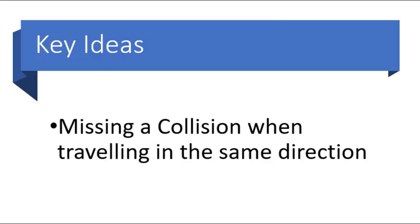When two bodies move in the same direction and they just about miss colliding, then at the point where they just miss the collision, their velocities would be identical. Therefore, their relative velocities would be zero. Also, their relative displacements would be zero with respect to each other, just at that point in time.